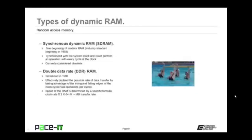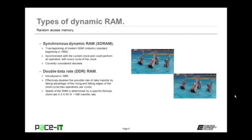Now let's move on to synchronous dynamic RAM, SDRAM. This is the true beginning of modern RAM. It was the industry standard beginning in 1993, synchronized with the system clock and could perform an operation with every cycle of the clock. It's currently considered obsolete because it was replaced by DDR. DDR was introduced in 1996 and effectively doubled the possible rate of data transfer by taking advantage of both the falling and rising edge of the clock cycle — two operations per cycle.